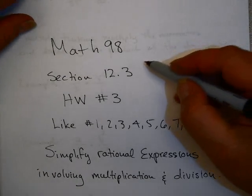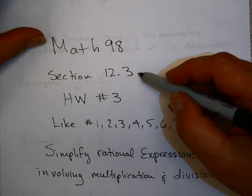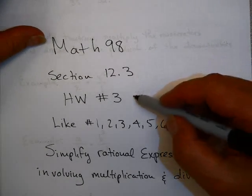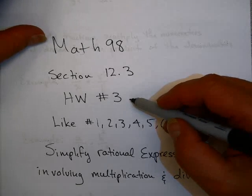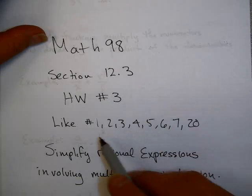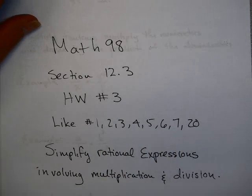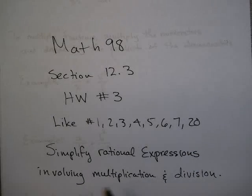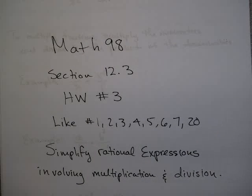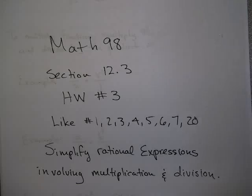In this video from Math 98, we're going to cover problems from section 12.3. This is from homework number 3, problems 1 through 7 and problem 20. It involves simplifying rational expressions where we involve multiplication and division.